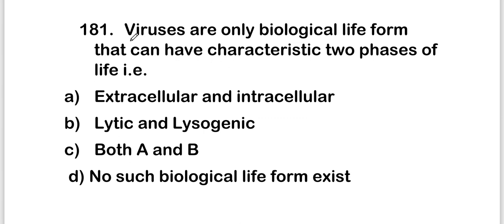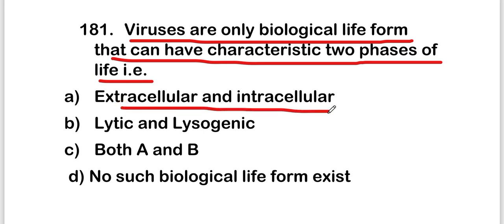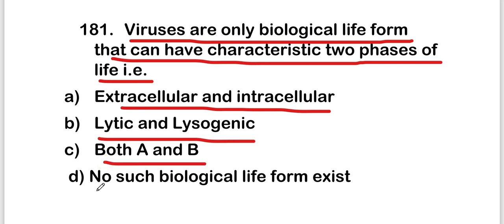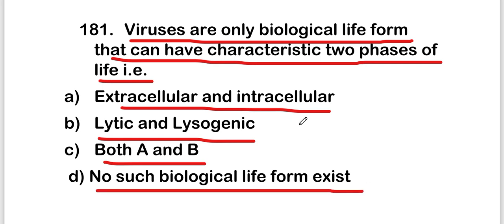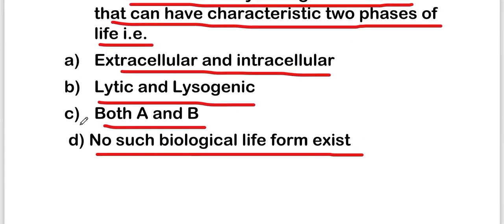The first question: viruses are the only biological life form that can have two characteristic phases of life. The options are: extracellular and intracellular, lytic and lysogenic, both A and B, or option D — no such biological life form exists. The right answer is option C, that is both A and B.